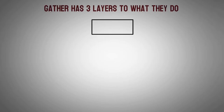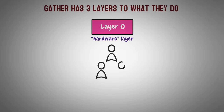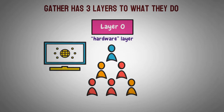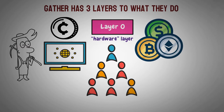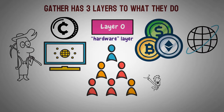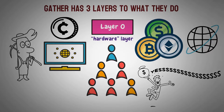Gather has three layers to what they do. Layer zero is called Gather Online, and basically it's the hardware layer where web and mobile developers are able to make money off of the user's processing power. Here's how it works: say you're visiting someone's website. Instead of ads, you opt in to allowing the web developer to use some of your computer's processing power to mine for crypto. This allows you to use the website without any interruptions from ads, and it helps make the website developer crypto as payment. This process will be completely transparent — you decide whether or not to opt in when you visit the website. And the best part? You get paid too. By allowing the website to use some of your processing power, you get a share of the crypto made.